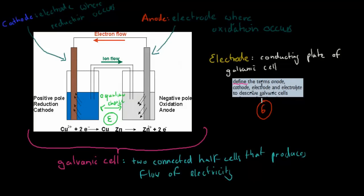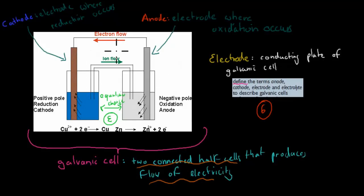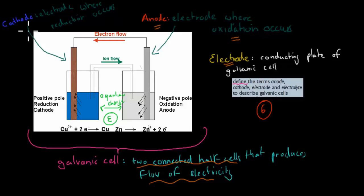Next we have to define the terms anode, cathode, electrode, and electrolyte to describe galvanic cells. A galvanic cell is two connected half cells that produce a flow of electricity. An electrode is a conducting plate of a galvanic cell — one will be the anode, one will be the cathode. The anode is the electrode where oxidation occurs — the metal loses electrons. The cathode is the electrode where reduction occurs — that electrode gains electrons. The electrolyte, in this case zinc sulfate and copper sulfate solution, helps balance charges.